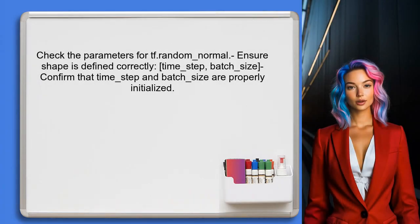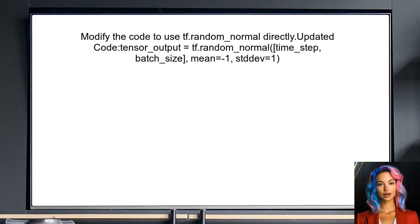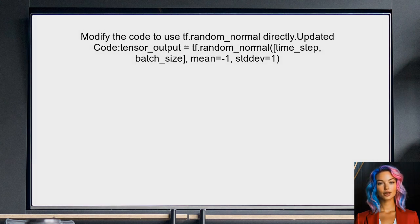Next, the user should ensure that the parameters passed to tf.random.normal are correct. The first parameter should be a shape tuple, which in this case is (time_step, batch_size). Let's confirm that both time_step and batch_size are defined correctly. The user can then modify the code so that the output of tf.random.normal is used directly as a tensor, instead of wrapping it in tf.constant.